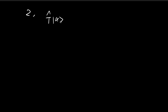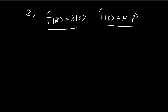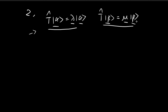The second theorem states: suppose we have an eigenvector alpha with eigenvalue lambda, and another eigenvector beta corresponding to a different eigenvalue mu. If we have two distinct eigenvectors corresponding to two different eigenvalues, then these two vectors must be orthogonal — meaning their inner product must equal zero. To prove this, consider the inner product between alpha and the vector obtained after applying the Hermitian transformation to beta.